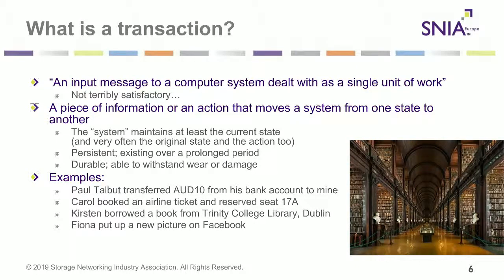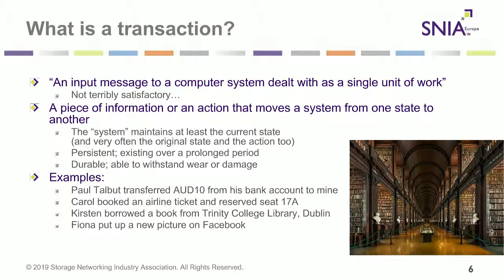So what is a transaction? There are several definitions. The formal definition is: an input message to a computer system dealt with as a single unit of work. But a better way of thinking about it is a piece of information or an action that moves the system from one state to another. The system maintains at least the current state, we apply some change — the action — and then we retain this new knowledge of the new state, and potentially also the old state, so we can see how we got from A to B. That's effectively a transaction.